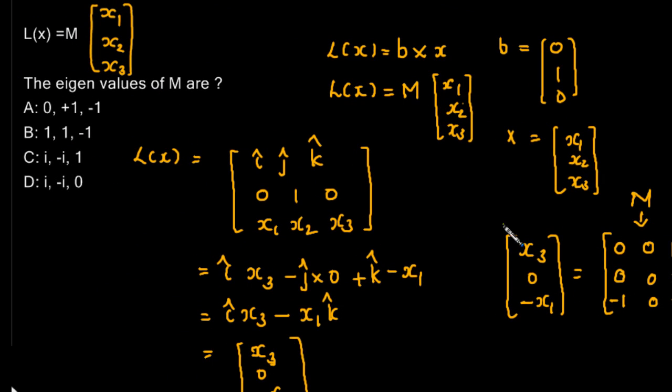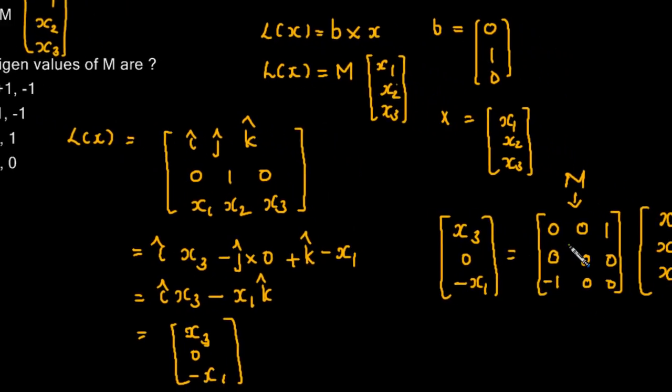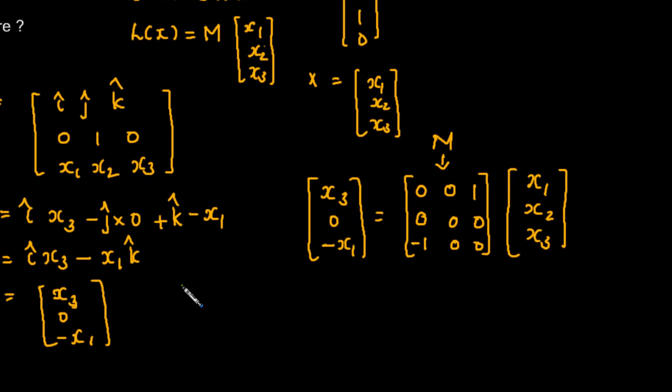So it needs a little bit more calculation. To find out eigenvalues of matrix M, we must create the determinant of M minus lambda I equal to 0 and solve for lambda. That will be the matrix [[-λ, 0, 1], [0, -λ, 0], [-1, 0, -λ]].